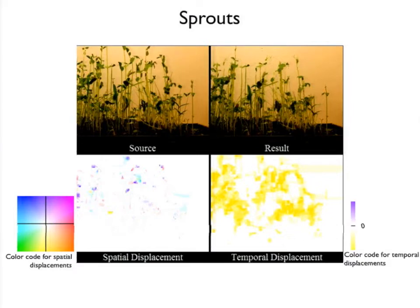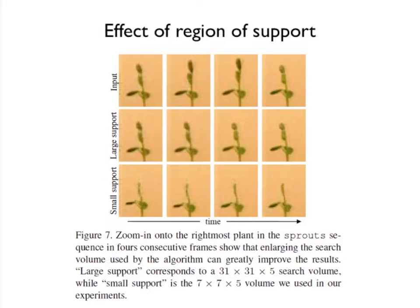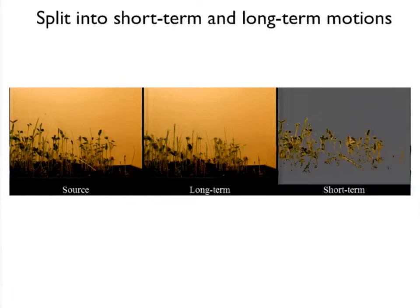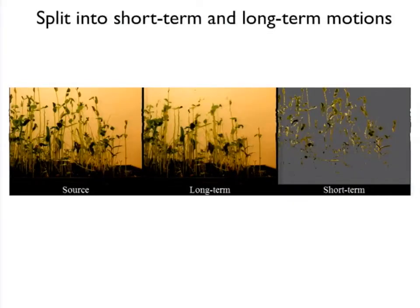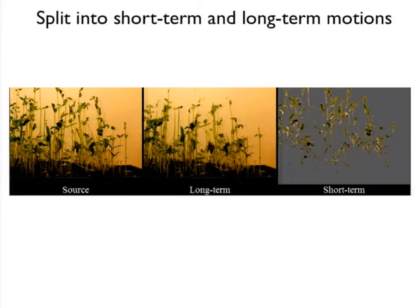Some sprouts have lost their tips in the processed output — that's because we didn't make the analysis window large enough to capture them. We can verify this by making a small video sequence and enlarging the region of support. With a large region of support the tips are preserved; with the small region used for the full sequence, they're lost. It's a computational cost that kept us from getting those sprout tips. Subtracting the motion-denoised video from the original gives the short-term component, completing the separation into long-term and short-term.